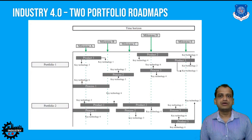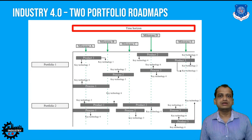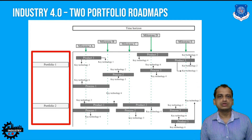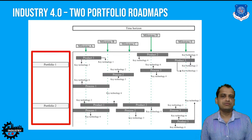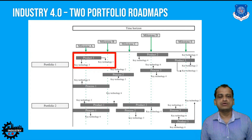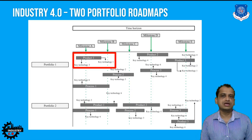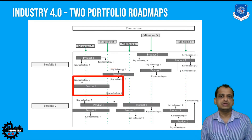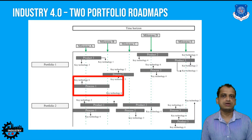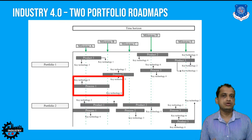For road maps, on the x-axis you have the time horizon — from past to future — and on the y-axis you have different portfolios comprising both product portfolios and process portfolios. This matrix has different milestones based on the time horizon specifically for products. If you are incorporating key Industry 4.0 technologies into products and processes, you have this roadmap based on different portfolios and time horizons. This is a framework or outline for the portfolio roadmap, and the company can use it for implementing Industry 4.0 in new product and process development.